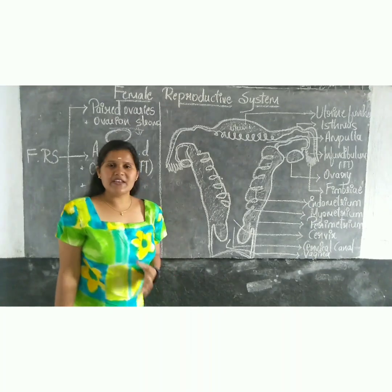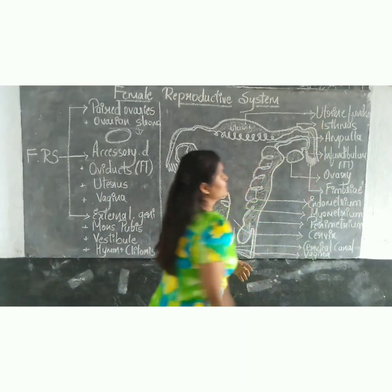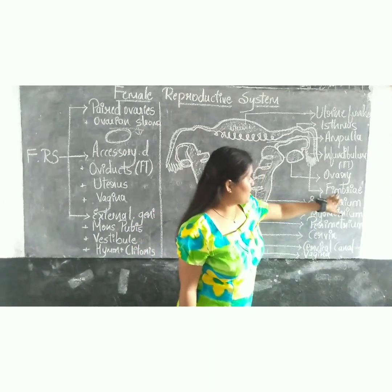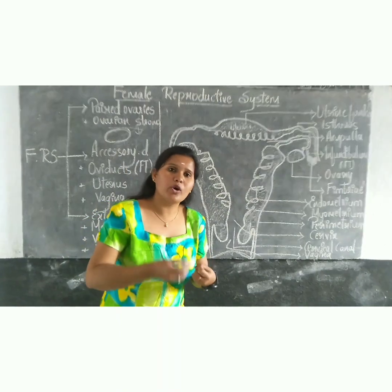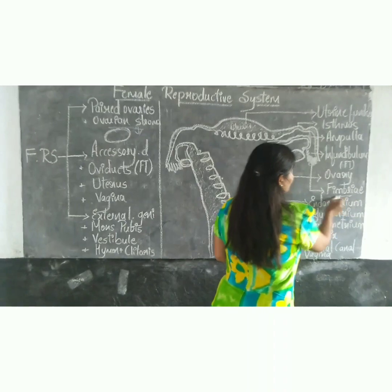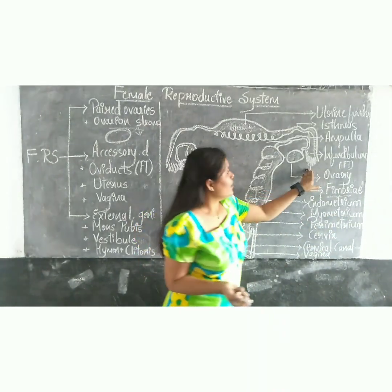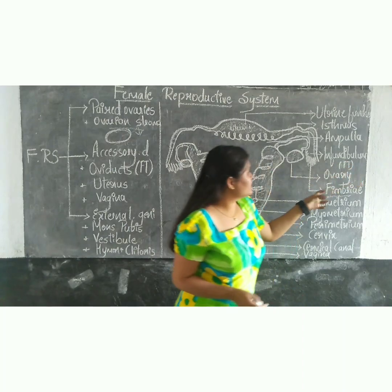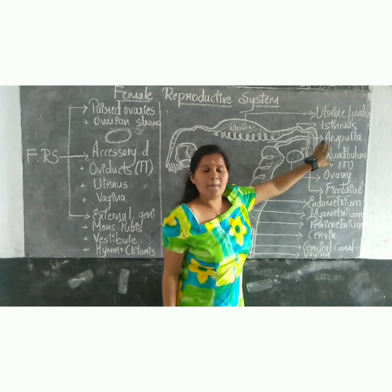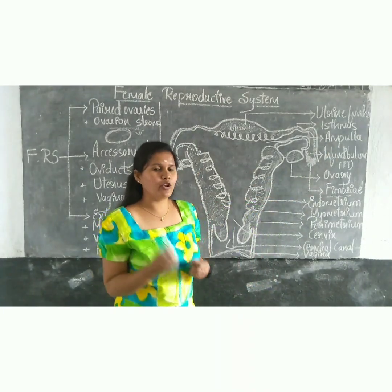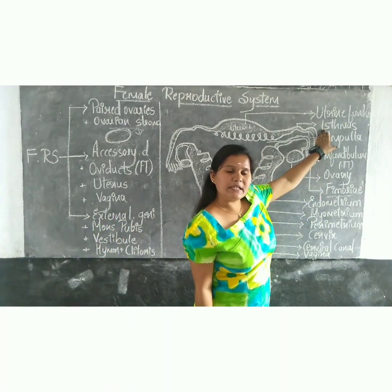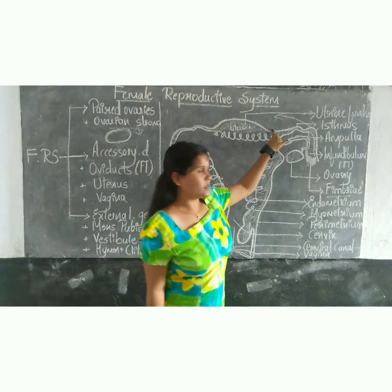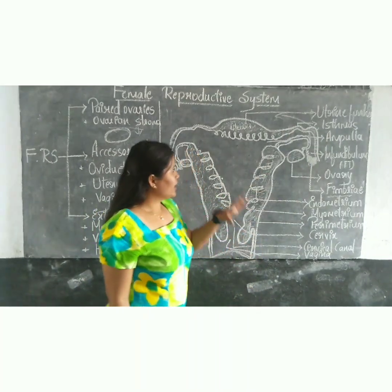Each fallopian tube consists of four parts. First is the fimbria, which are finger-like projections that collect the ovum after ovulation. The fimbria are attached to the infundibulum. The infundibulum leads to the ampulla, which is the wider part of the fallopian tube. The ampulla leads to the isthmus, which links the fallopian tube to the uterus.